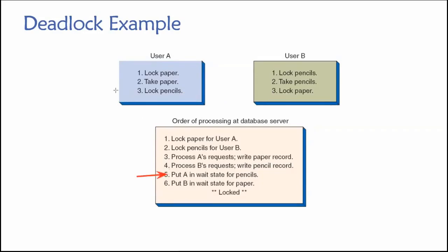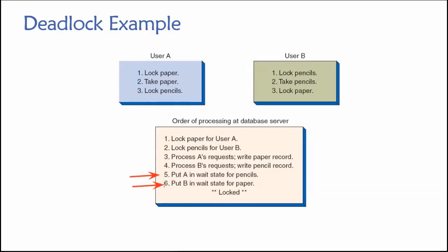User A is put in a wait state for pencils — pencils are already locked, so the database can't lock them for user A. At the same time, user B is put in a wait state for paper — B has requested exclusive access to paper, but it's already locked by user A. So user A is waiting for B to unlock pencils, and B is waiting for A to unlock paper. Around and around they go — they just sit and wait forever because no one's going to release their lock, since neither transaction is complete. That is deadlock.